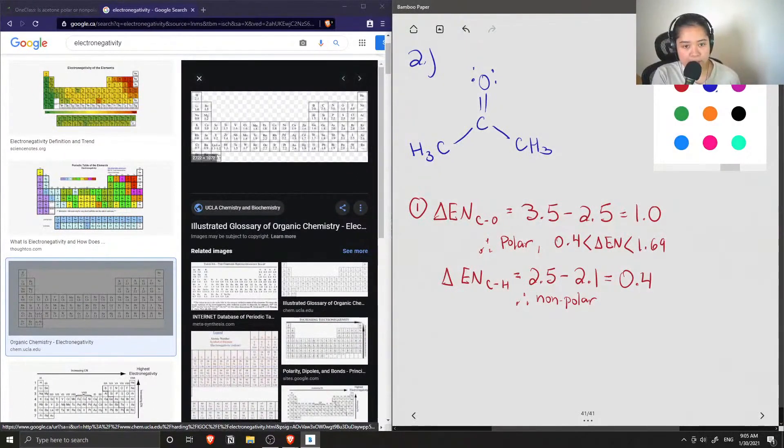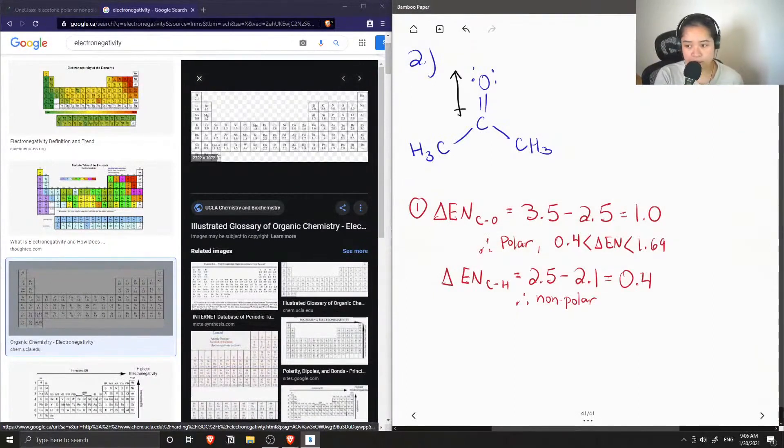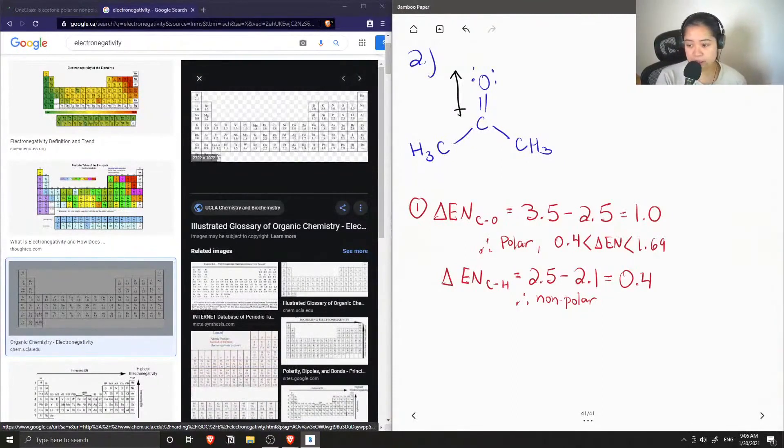I can show a dipole moment going towards the direction of the oxygen because, since oxygen is much more electronegative, there's going to be an uneven distribution of electrons.